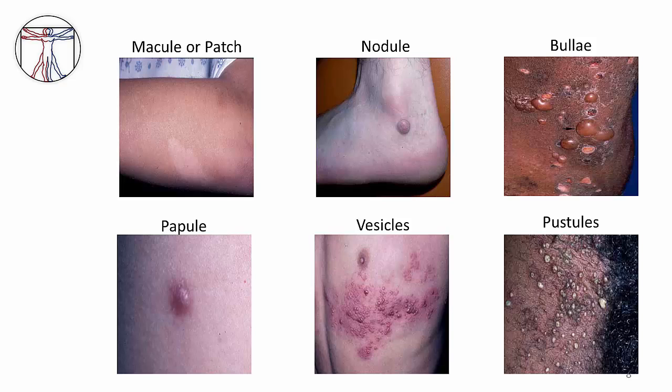Pictured here is one example of a bullous skin condition known as bullous pemphigoid, which is an autoimmune disease. Pustules are vesicles that are filled with pus — acne is a common example of a pustular skin condition. Also pictured here is folliculitis, an infection involving hair follicles.